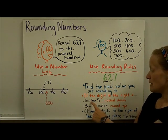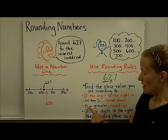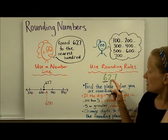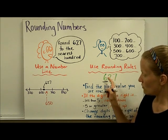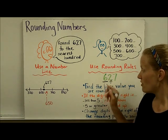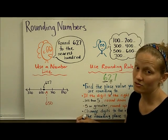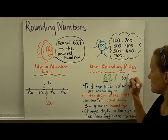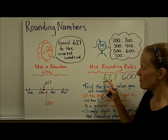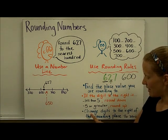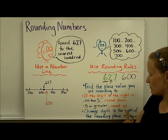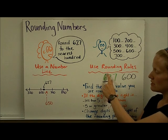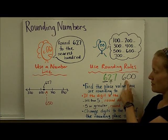If the digit to the right is less than 5, round down. If that digit is 5 or greater, you're going to round up. Since this 2, which is to the right of the 6, is less than 5, we're going to round down to the nearest 100. The 100 down from 627 is 600 — you can think of the 6 staying the same. Then make sure you change the digits to the right of the rounding place to zeros. So this stayed the same and these two digits became zeros.